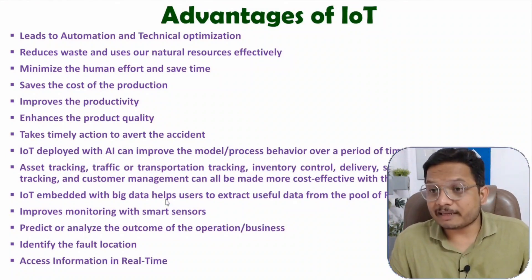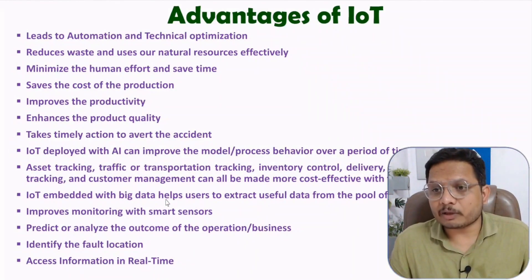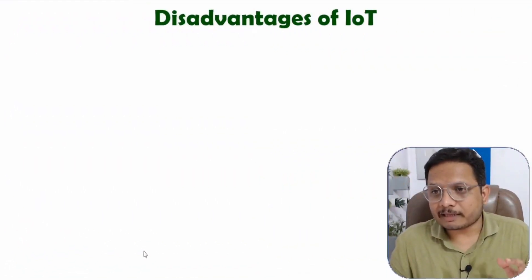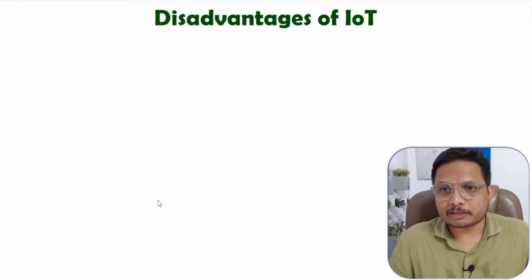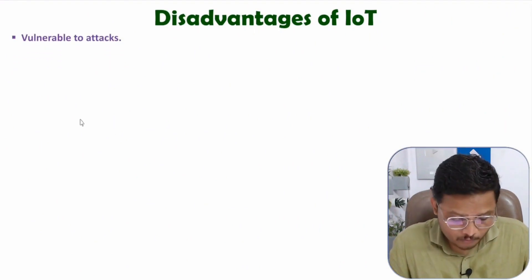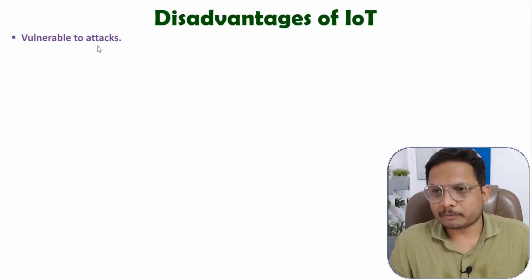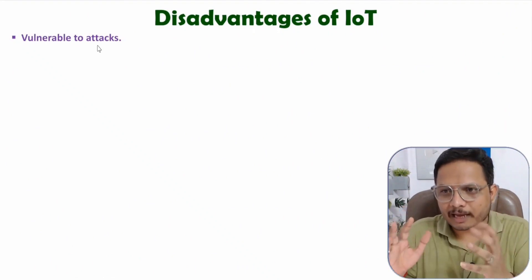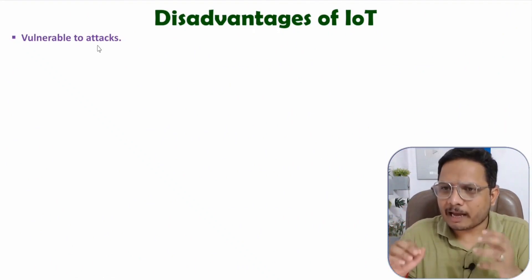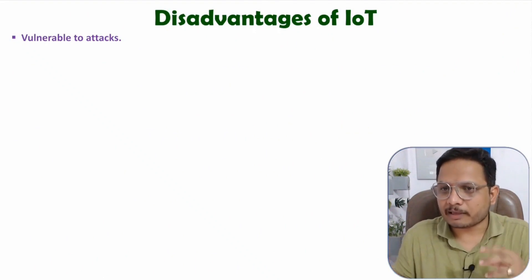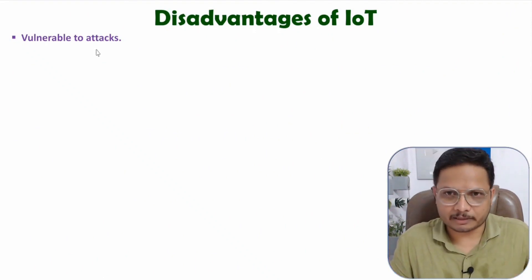Now, I will explain the disadvantages of IoT. When we discuss the disadvantages of IoT, it is crucial to note that it is sensitive to various types of attacks. Since everything is available on the Internet, there is a high possibility of hackers compromising the system, which makes it always vulnerable to attacks.